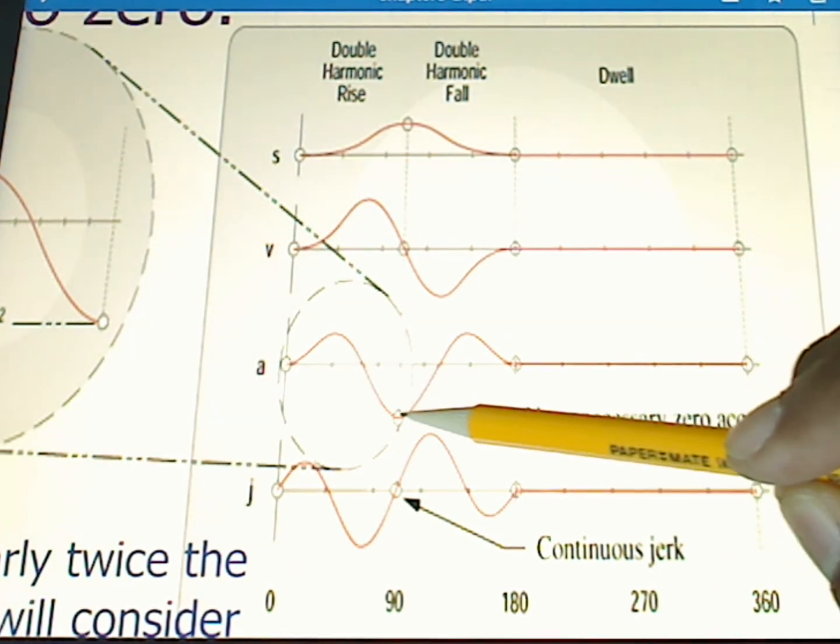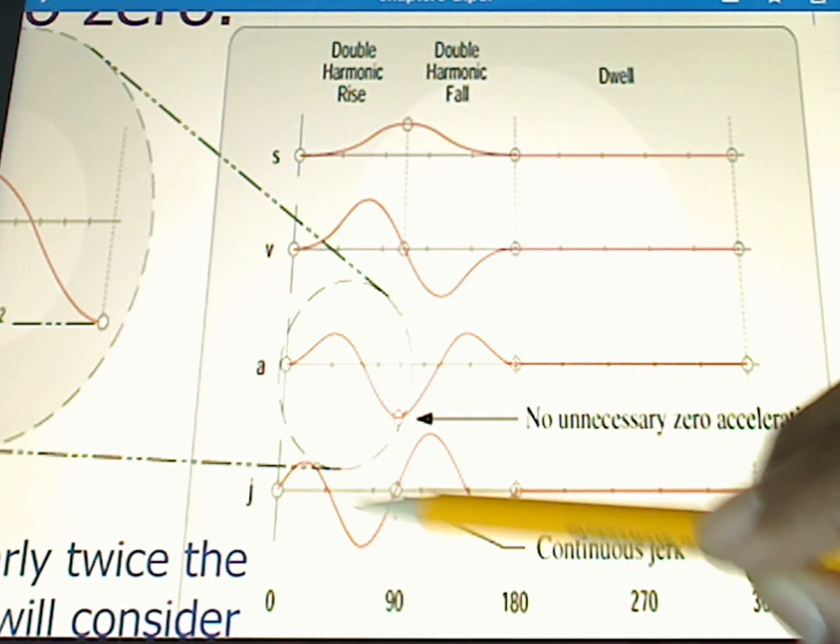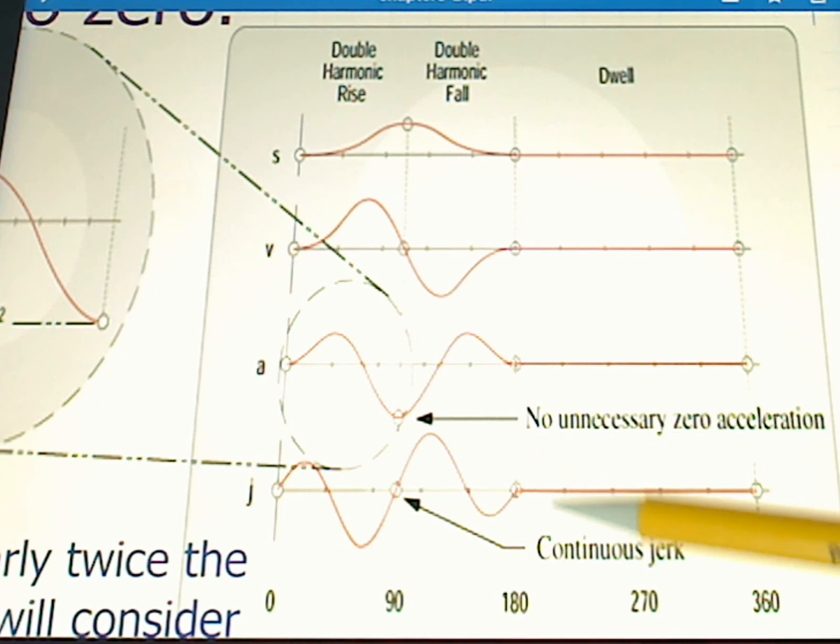We see our velocity—none of that little weird thing that happened there in the previous case. Our acceleration stays negative. It does not come back to zero and pop back down. And because of that we have a continuous jerk function.